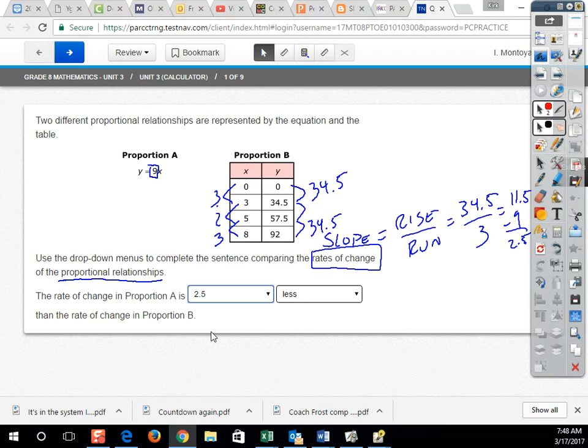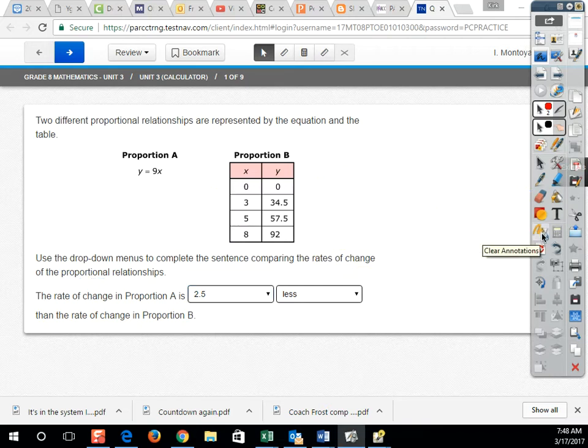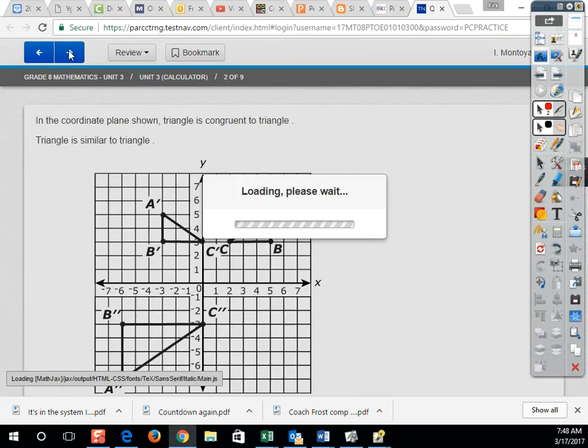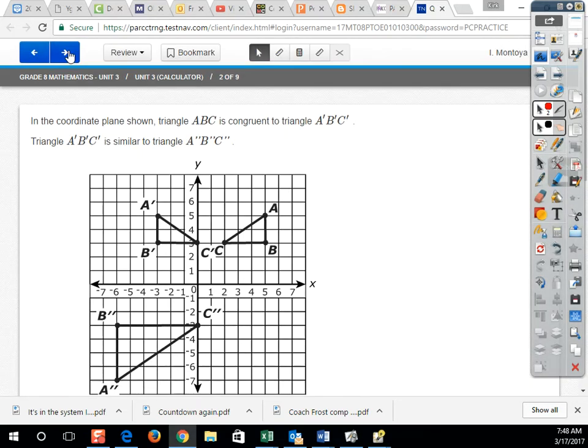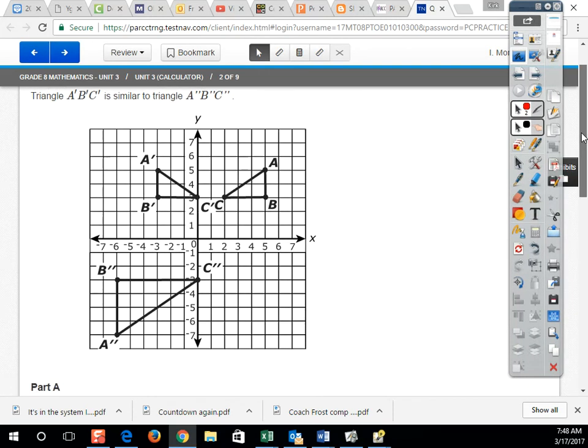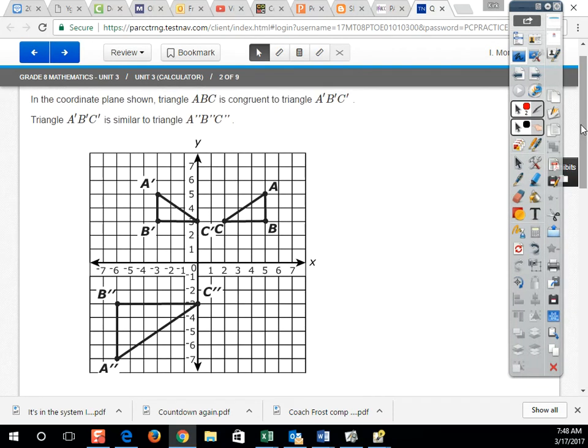Let's take a look at the second question. In the coordinate plane shown, triangle ABC is congruent to triangle A prime, B prime, C prime. And triangle A prime, B prime, C prime is similar to triangle A double prime, B double prime, C double prime. Clearly, before we look at the question, we have a reflection about the line X equals 1 to go from our original to our first.